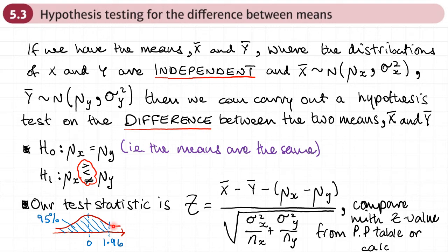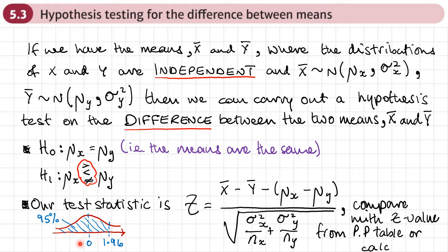For example, if we were doing a test at the five percent level of significance, that would be ninety-five percent on the left. For an upper tail test, the critical region is in the upper tail, and the critical value would be 1.96. If our value of Z is greater than 1.96, we reject H0 — there's evidence to suggest a difference between the means. If Z is less than 1.96, we accept H0, suggesting no difference between the two means.